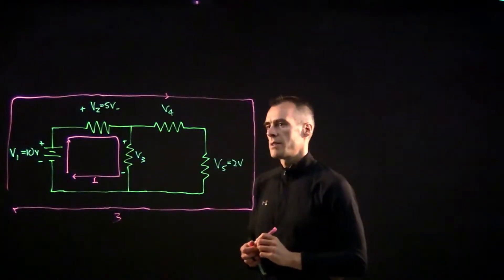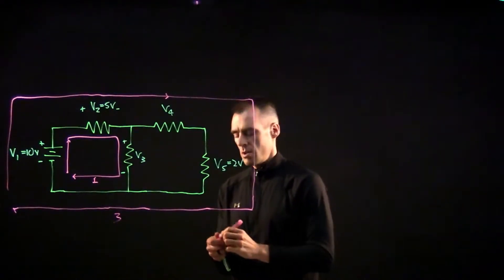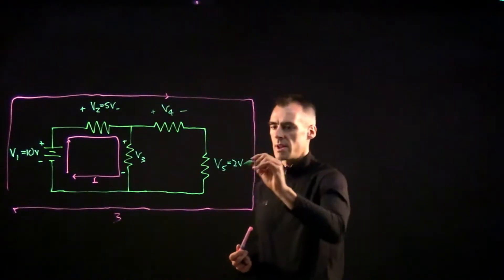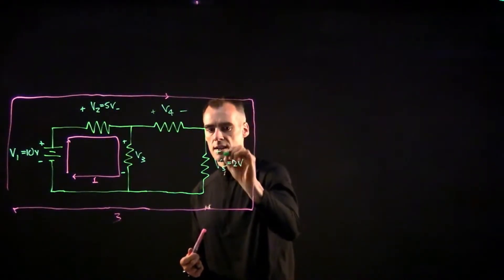So as we're going across V4, we're going to have plus on this side, minus on this side. And as we're coming down across V5, it'll be plus on this side and minus on this side.